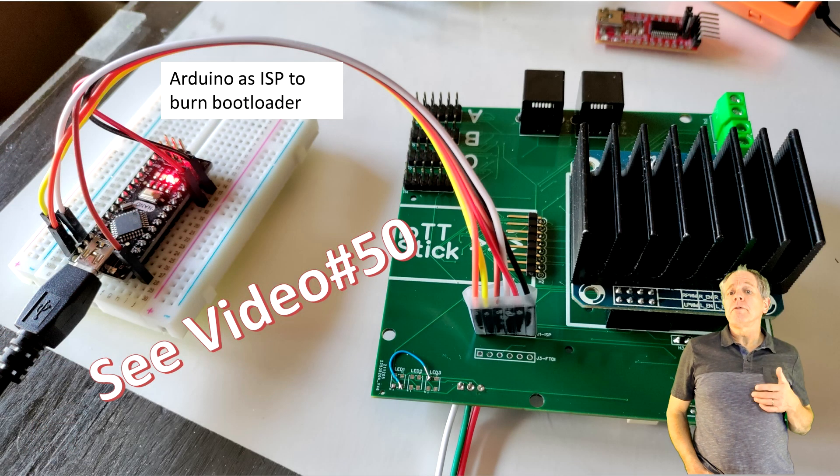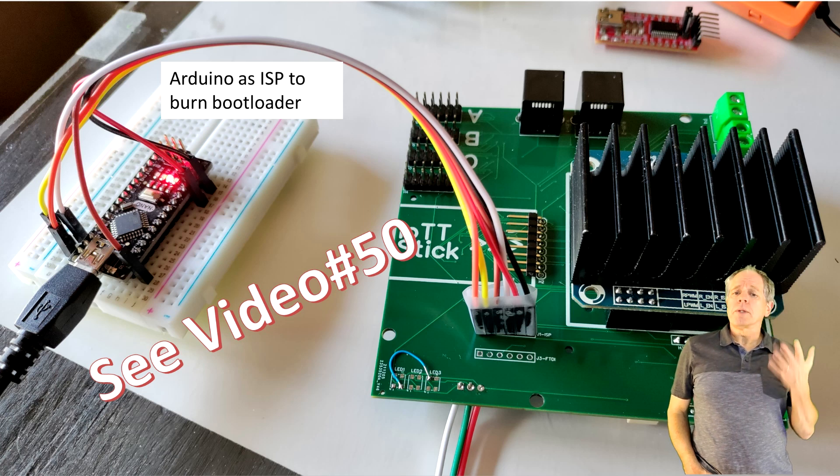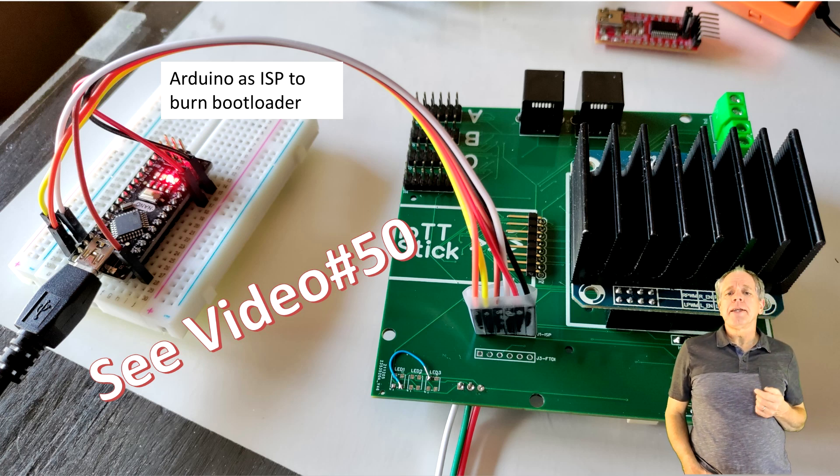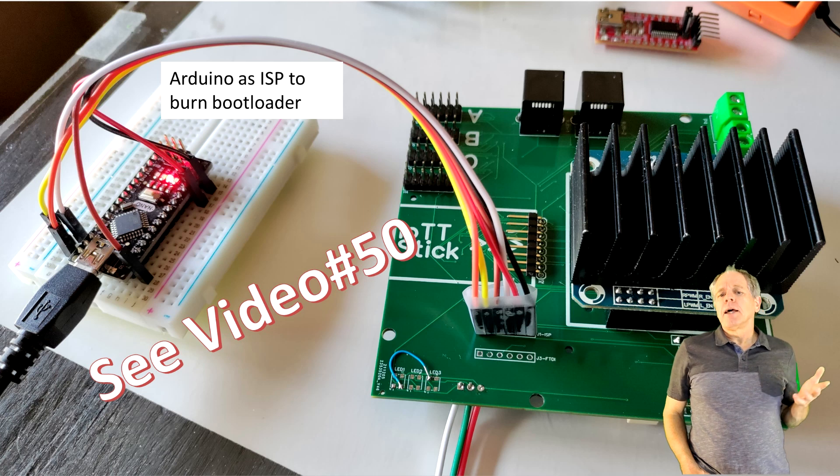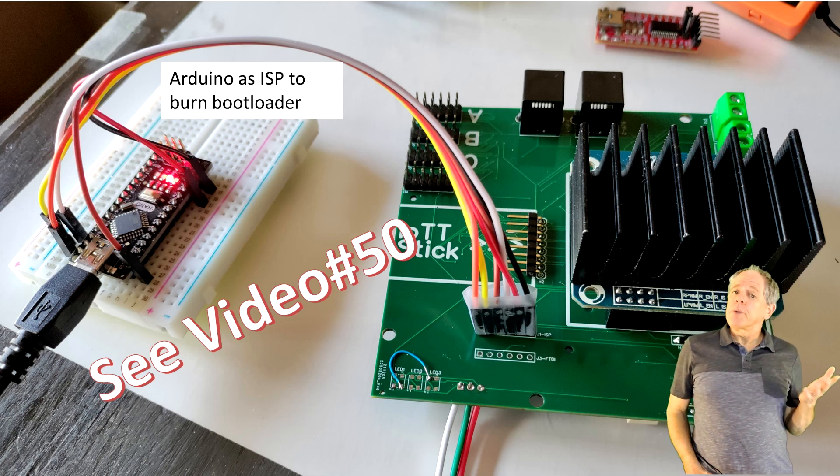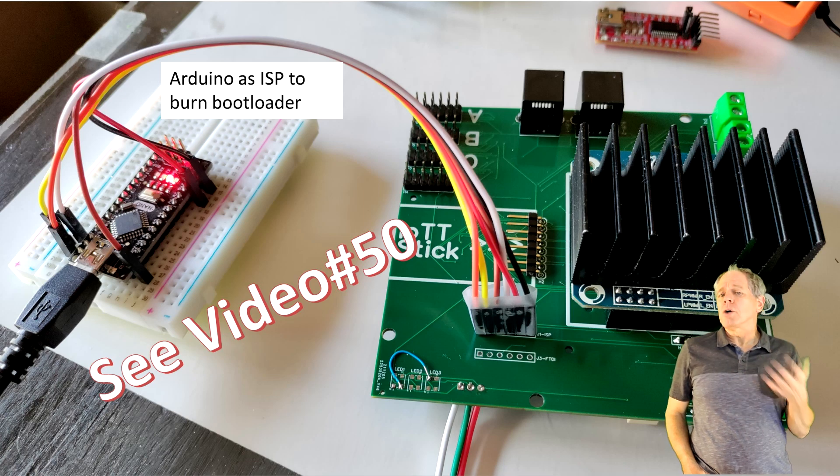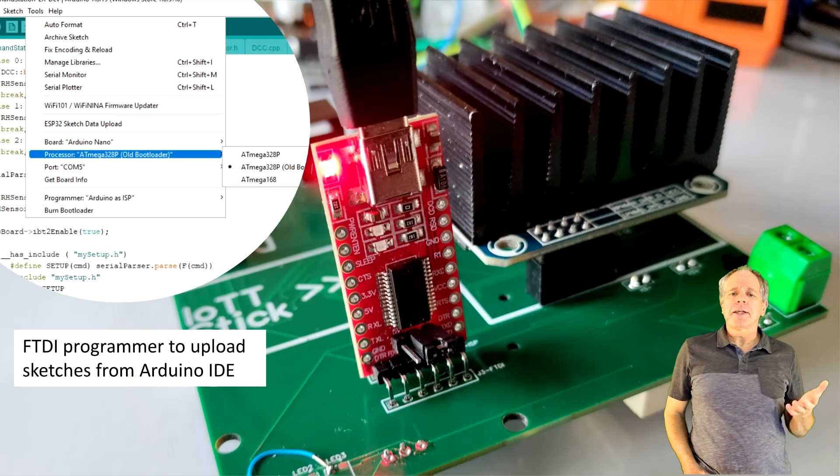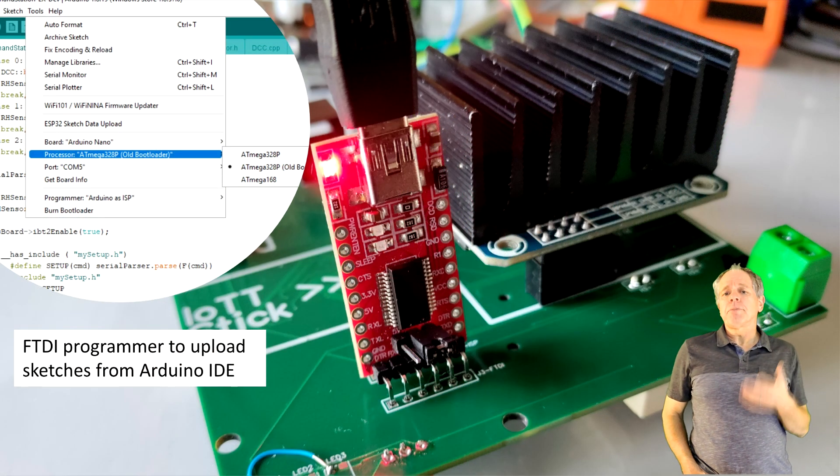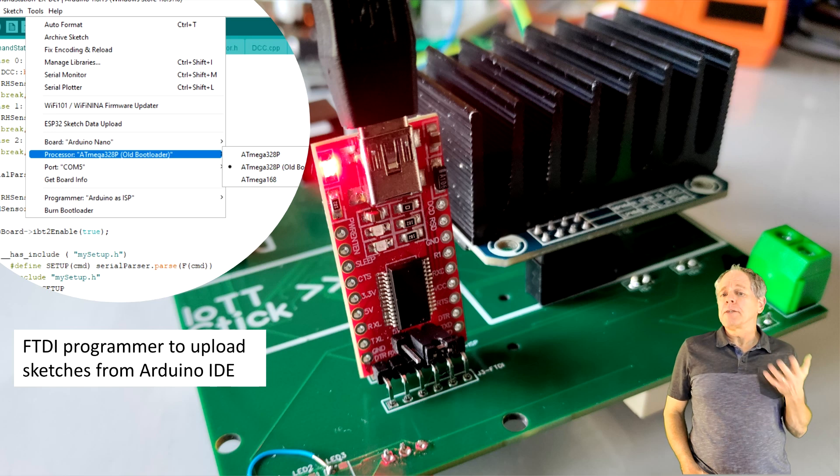Next, I used an Arduino with ISP software to burn the bootloader into the ATmega328P processor. I have described this step in video number 50. The process worked flawlessly at the first try, which meant I was now able to connect directly from the Arduino IDE using an FTDI programmer and a regular USB connection.